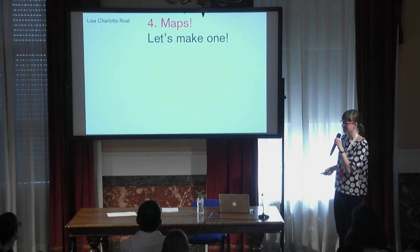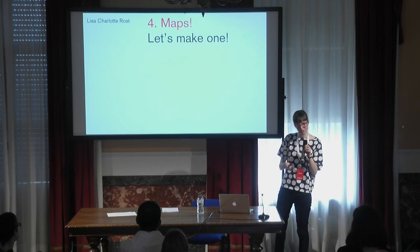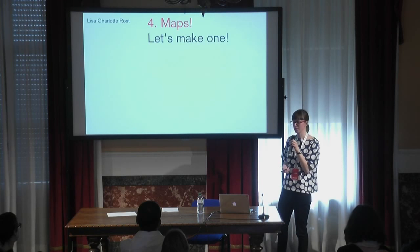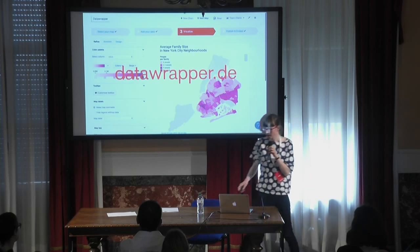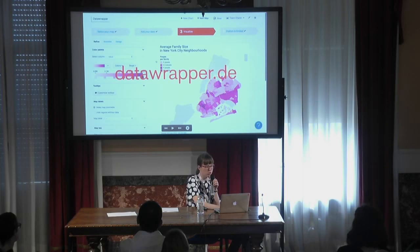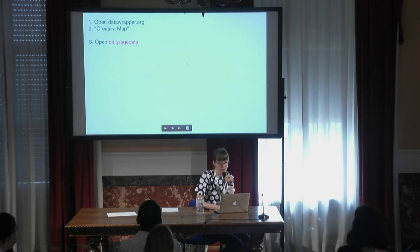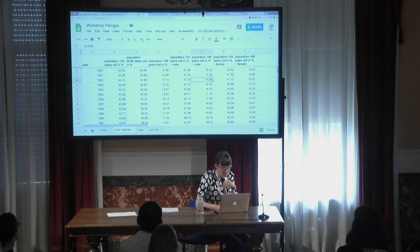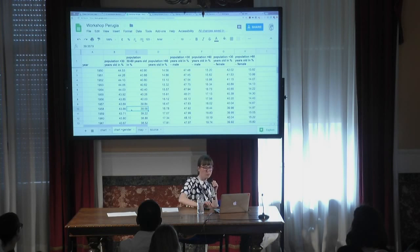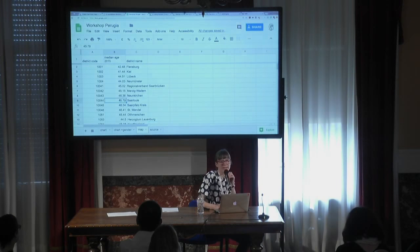Now, maps. Let's make one, because maps are super important for journalists — especially for local newspapers wanting to show what's happening right in front of your doorstep. We're going to use Datawrapper again with population demographics data. We know there are more old people in Germany than young people, but we don't know where this is happening geographically.